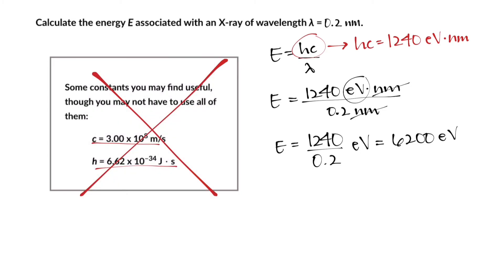Another way of writing 6200 electron volts is to notice that this has an invisible decimal right behind that last zero. If you move it over three times, you'll get 6.2, but now you're multiplying by 10³ electron volts.